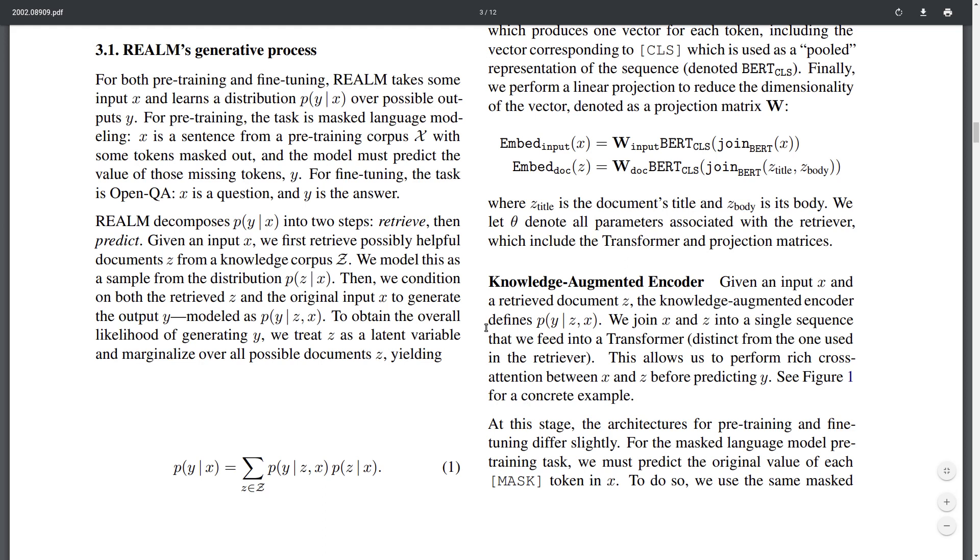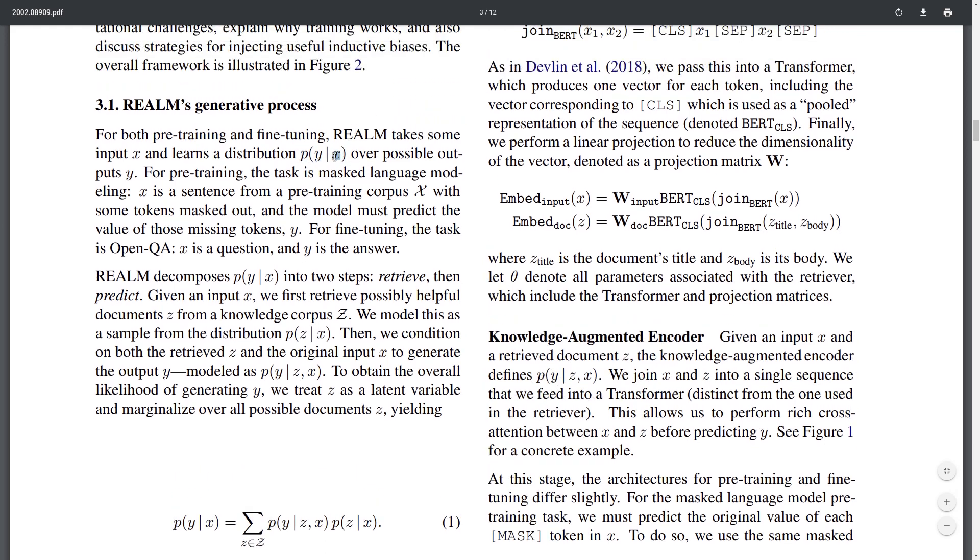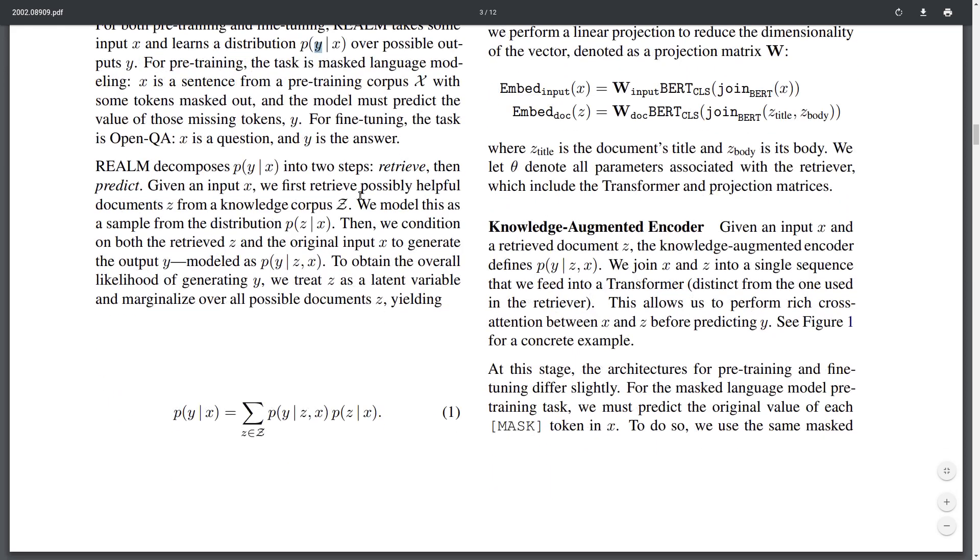Meaning that you're going to be fine-tuning your retrieval to be getting better documents, documents that are more relevant to improve your final predictions. In the standard BERT setup, you have some input text which could be masked, and you're trying to predict the missing mask token y. However, in this REALM model, they introduce this latent variable z, which is a subset of the database capital Z consisting of potentially millions of documents such as the whole Wikipedia.